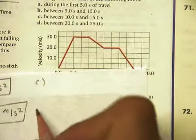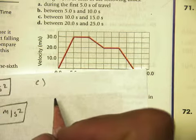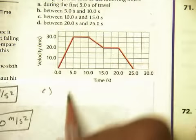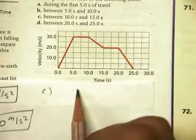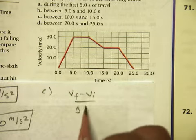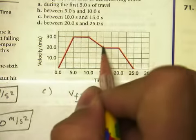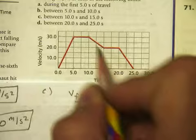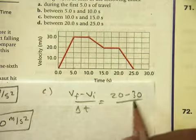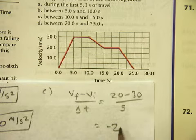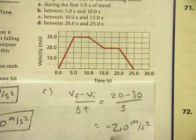Part C says between 10 and 15 seconds. At 10 seconds it's up here at 30, so that's my VI. VF minus VI over the change in time. My final velocity is 20, my initial velocity is 30. The time it took is 5 seconds, so that's negative 2.0 meters per second squared.